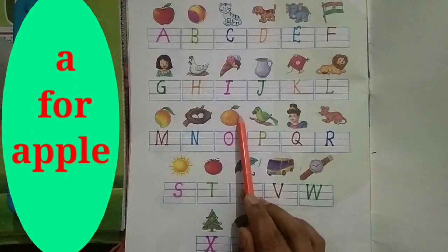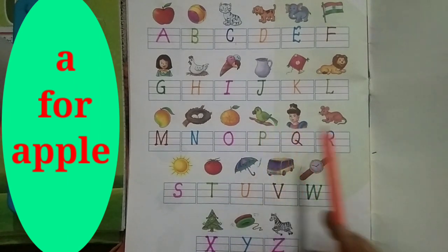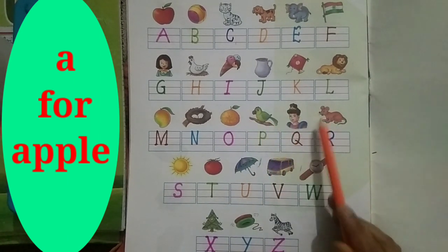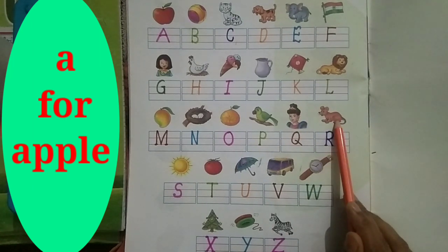O for orange, P for parrot, Q for queen, R for rat.